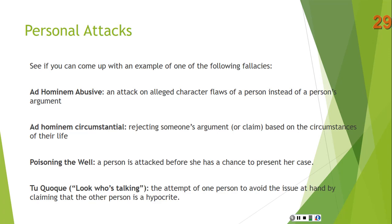I would challenge you to see if you can come up with an example of one or more of the following fallacies: ad hominem abusive, ad hominem circumstantial, poisoning the well, and tu quoque. The key in all of these arguments is that the attack on the person — whether it's on their character, their circumstances, them being a hypocrite, or attacking a person before they have a chance to speak up for themselves — the attack is irrelevant to the truth of the claim or the argument being made by the person who's being attacked.